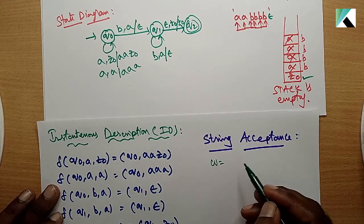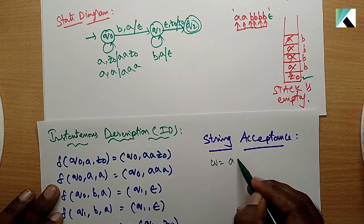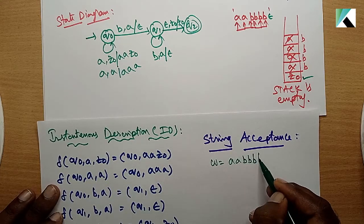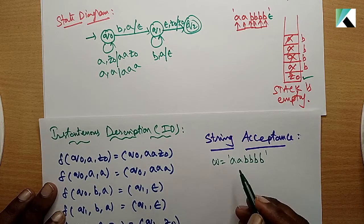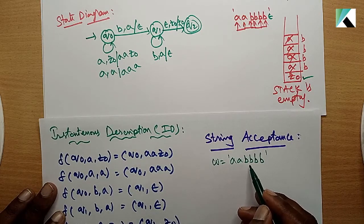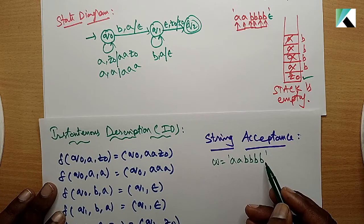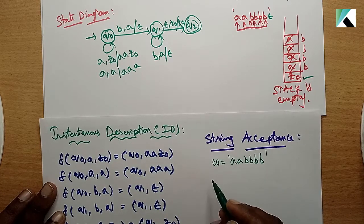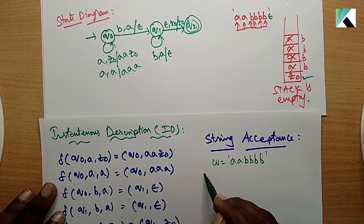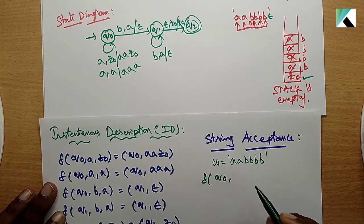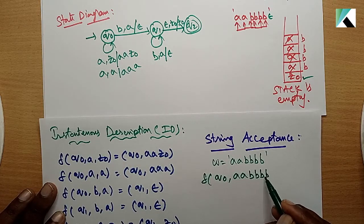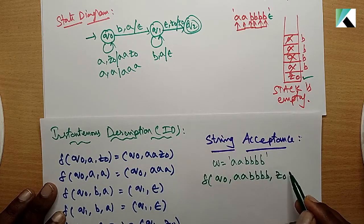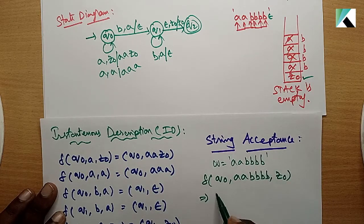For string acceptance, take one string w equals aabbbb - two a's, four b's. This satisfies a power 2 b power 4. Then delta of q0, given string aabbbb, top of the stack is z0.